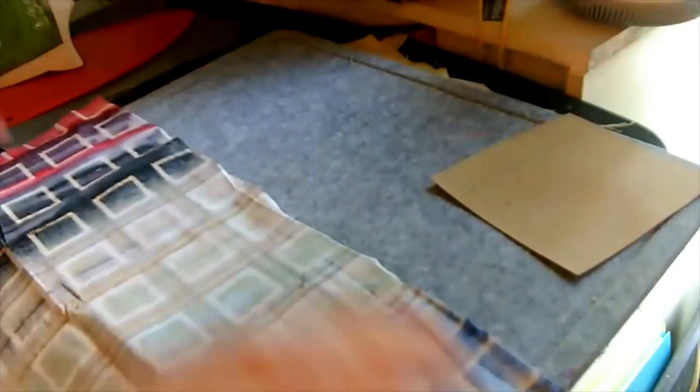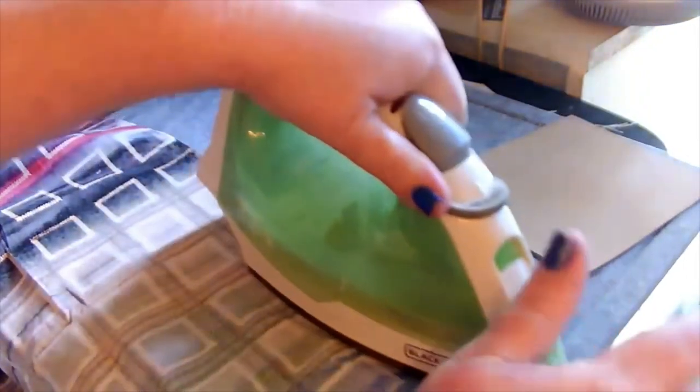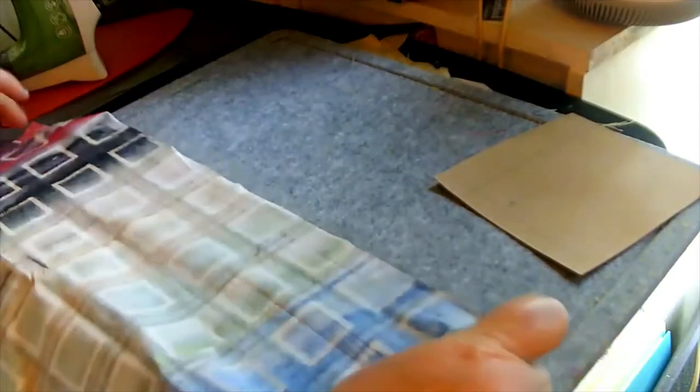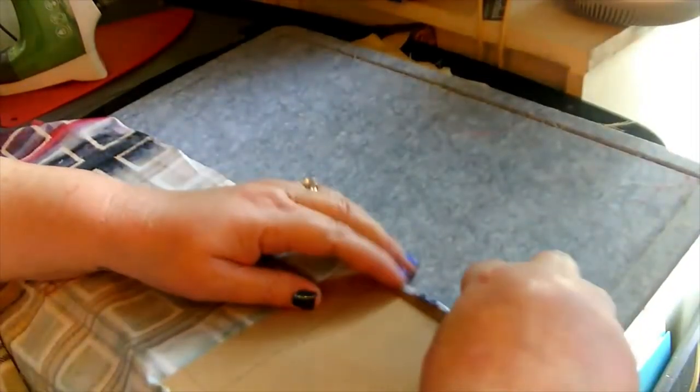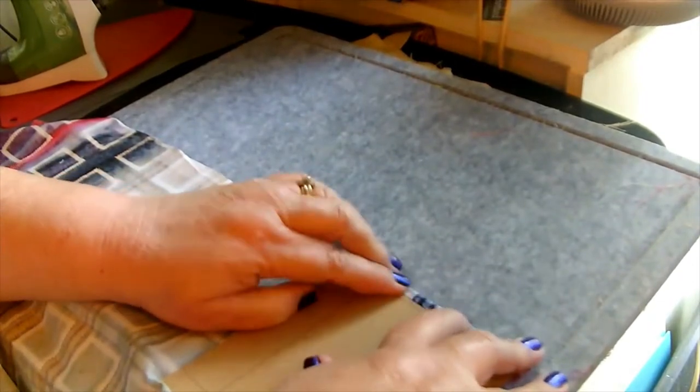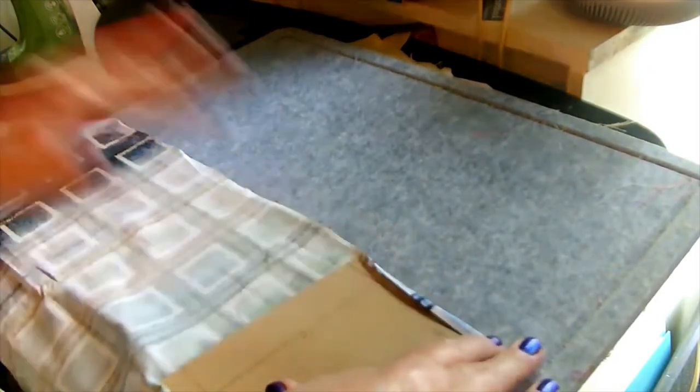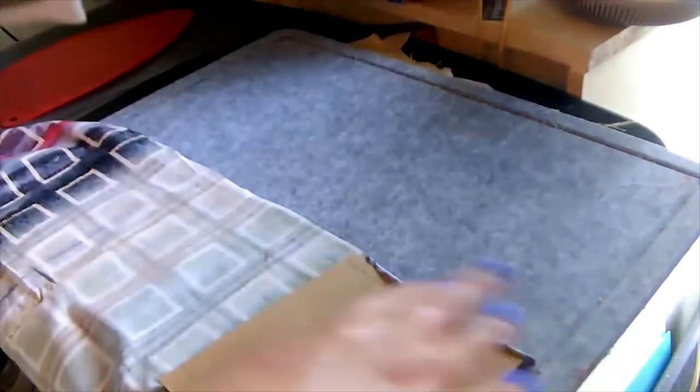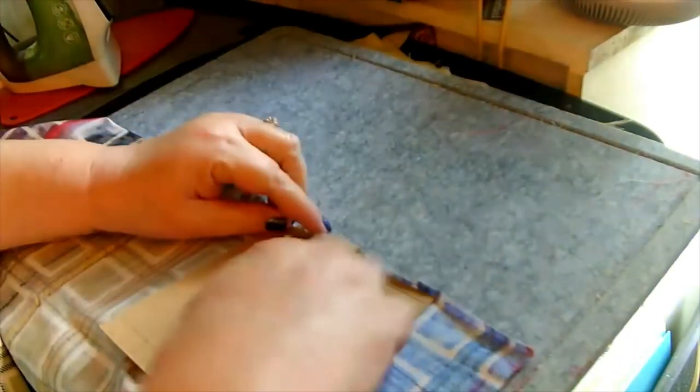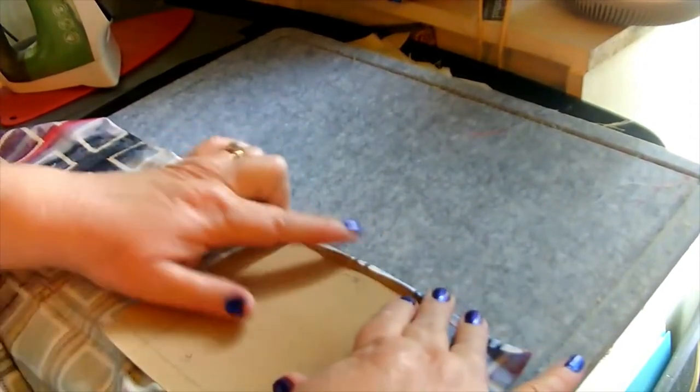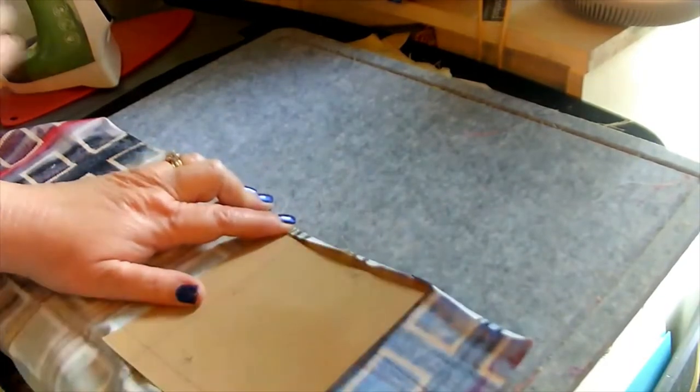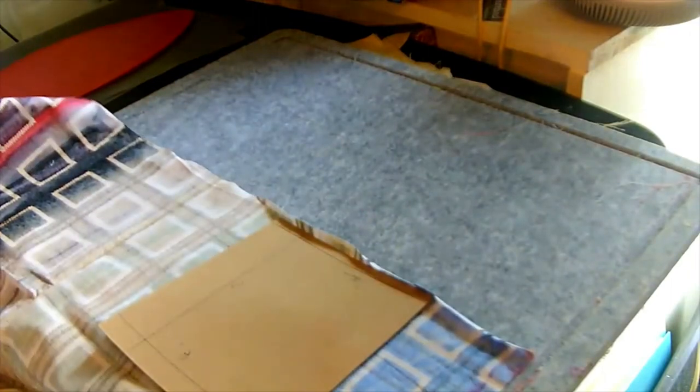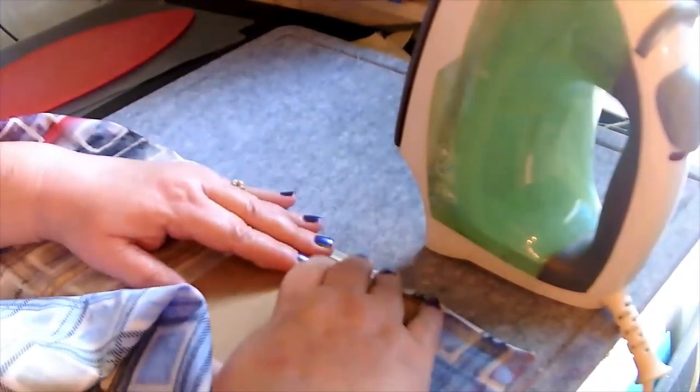Okay, so the first step is we're going to iron the fat quarter flat. And then I'm going to use my little homemade template here to bring my fabric over a quarter of an inch right in line with that mark and iron it down. And because I'm using cardboard, I don't have to worry about it burning. Hopefully you can see that mark on there. I'm just bringing the fabric over to the quarter inch mark.